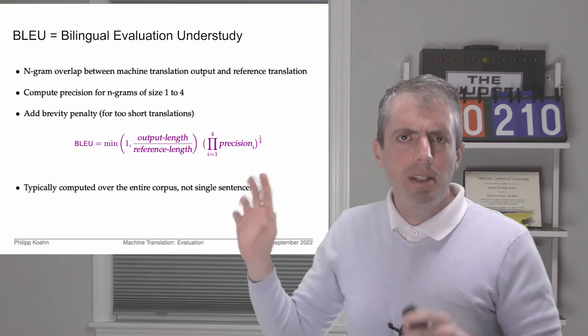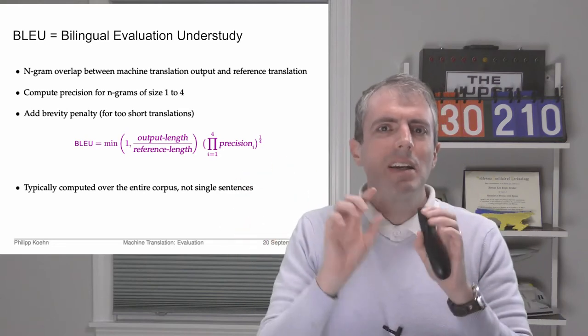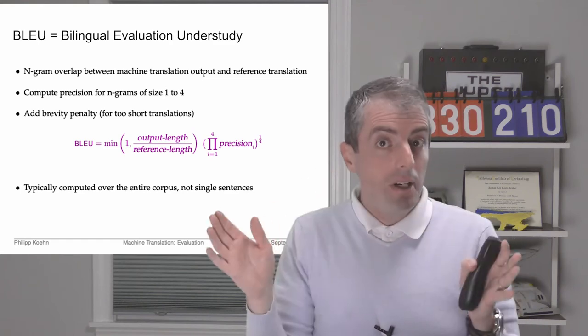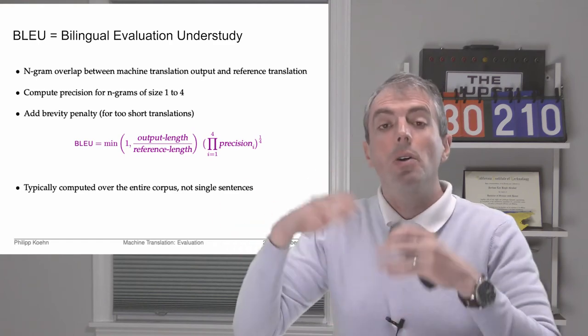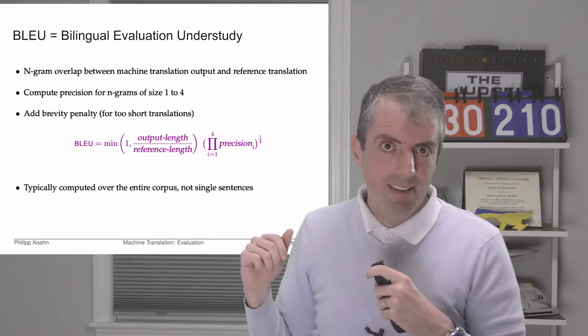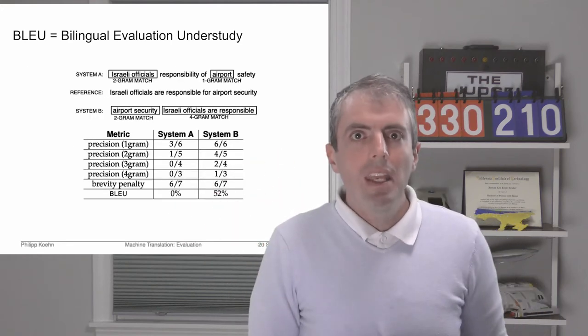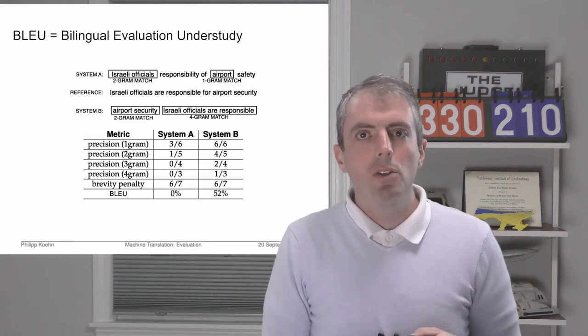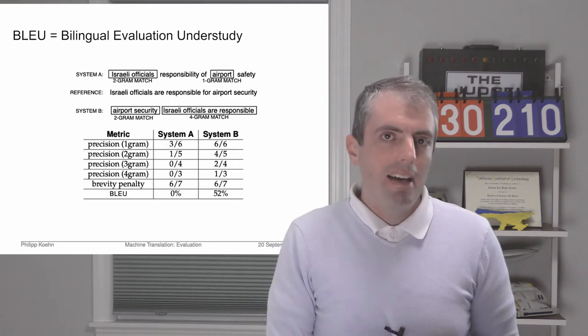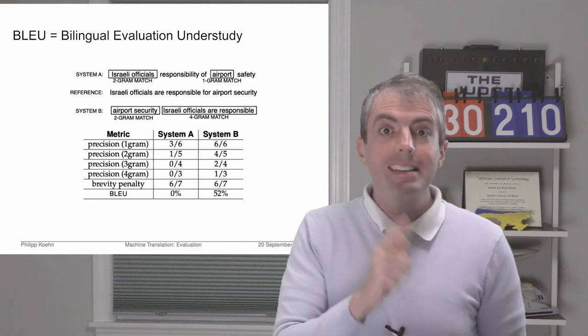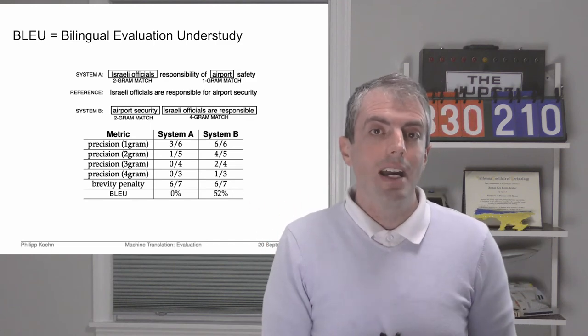There's also a brevity penalty because you could game this metric by just finding one correct n-gram of the maximum length and outputting that and nothing else. So you also want to match the length of the reference sentence. So let's take a look at an example again, borrowed from Philip Kuhn. In this example, System A gets quite a few individual words right, less than half of the bigrams, but gets an overall BLEU score of zero because it didn't get any of the larger n-grams.